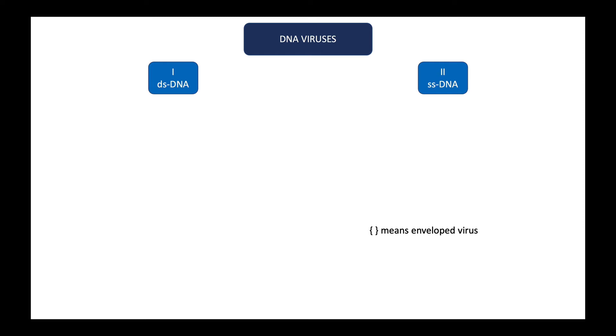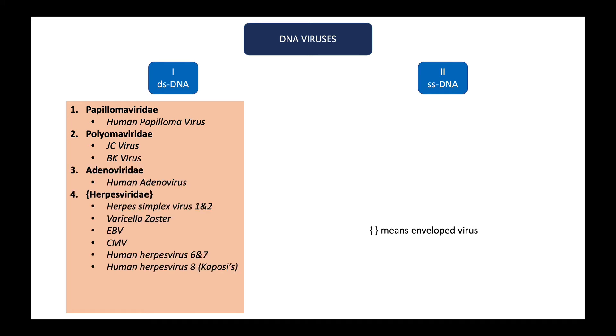All enveloped virus families are represented with curly brackets. Class one is double-stranded DNA viruses. The first family is Papillomaviridae which has human papilloma virus known for causing genital warts and various cancers, especially cervical cancer. Then we have Polyomaviridae family which has JC virus causing encephalitis and BK virus that affects transplant patients. Then we have Adenovirus family and the Herpes family of viruses. There are eight important herpes viruses that are pathogenic to humans.